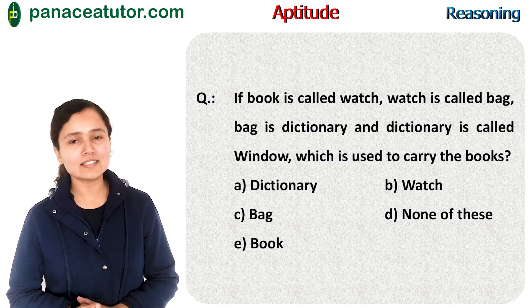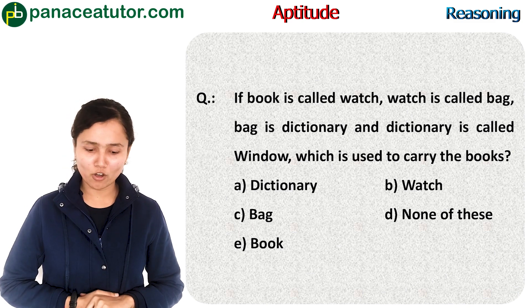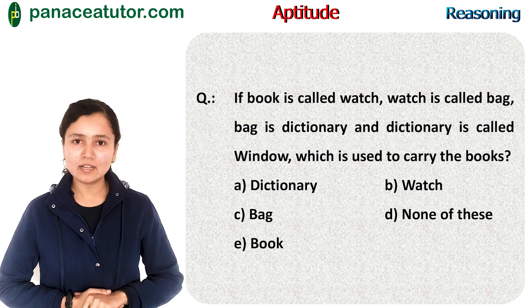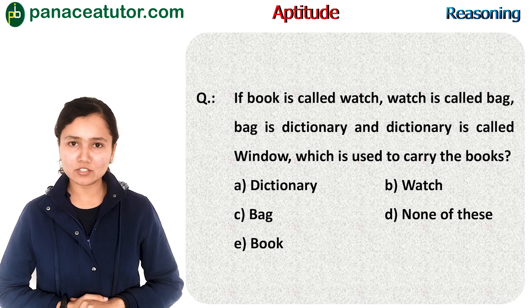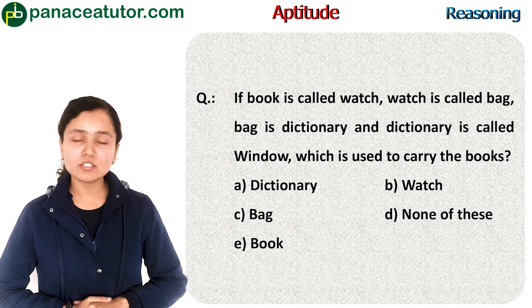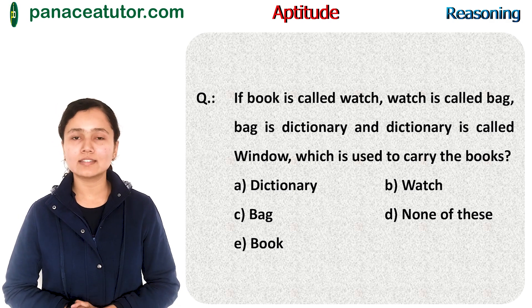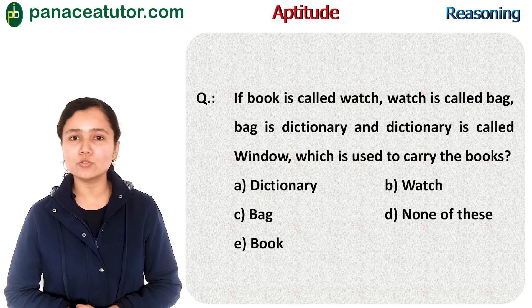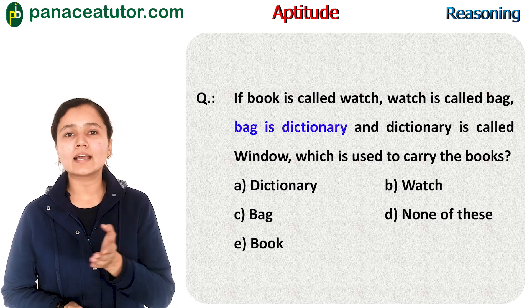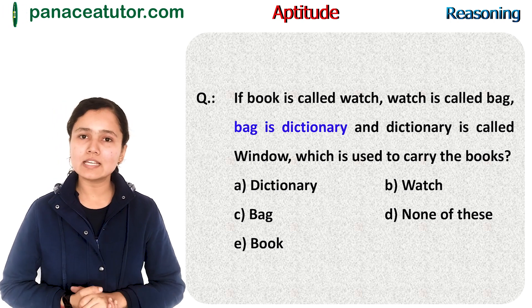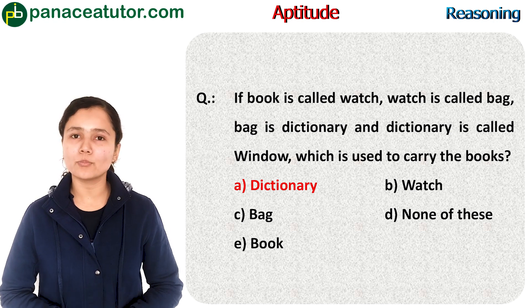Another question: If book is called watch, watch is called bag, bag is called dictionary, and dictionary is called window — then which is used to carry books? It is obvious that a bag is used to carry books. In the question it is written 'bag is called dictionary', so the answer will be dictionary. That is option A.